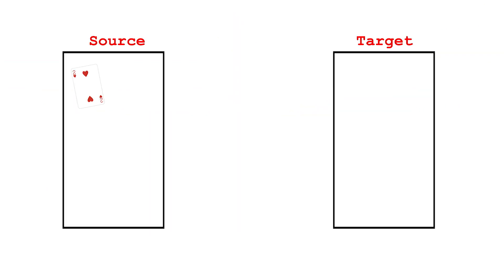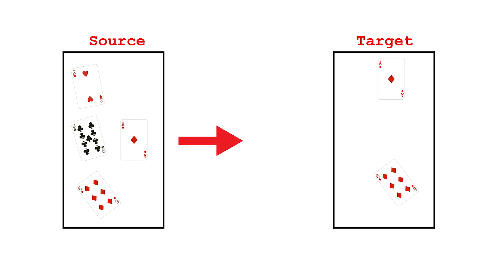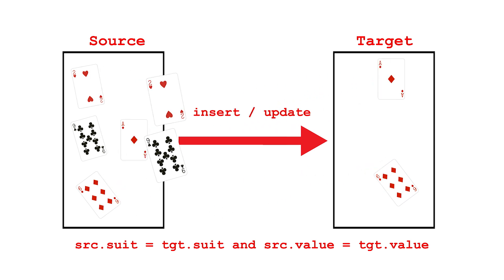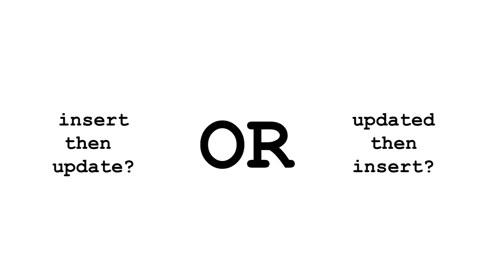You can spend a lot of effort trying to decide whether it's better to do insert first or update, only to have this effort undone by changes in your data. Luckily, there's a way out of this mess: Merge. This is one statement which takes rows from one table and inserts or updates them into another based on the join criteria. If the join finds a matching row, it updates. If not, it inserts. So you no longer need to decide which to do first.